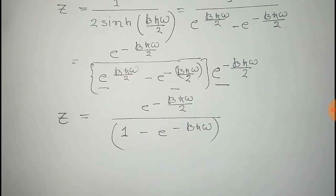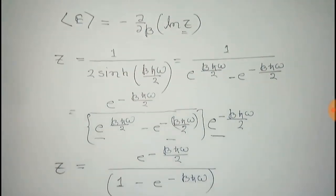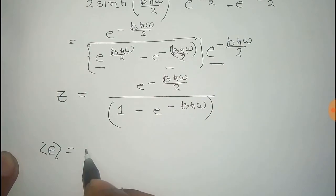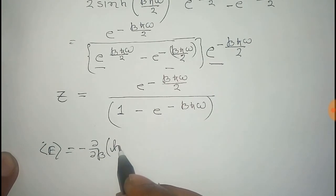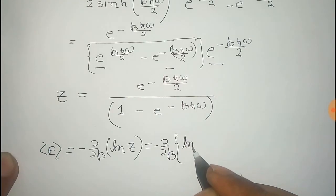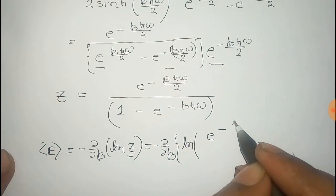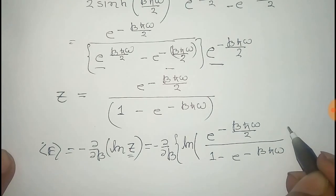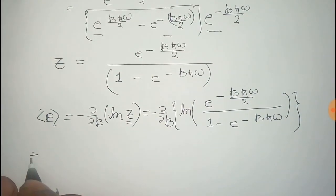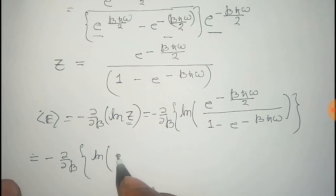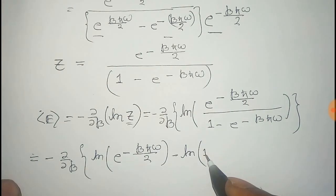Thus we simplify Z, and now we have to find del/del-beta of log Z. We put the value of Z: it is e^(-βℏω/2) divided by (1 minus e^(-βℏω)). Using the log rule log(a/b) = log(a) minus log(b), this becomes log(e^(-βℏω/2)) minus log(1 minus e^(-βℏω)).